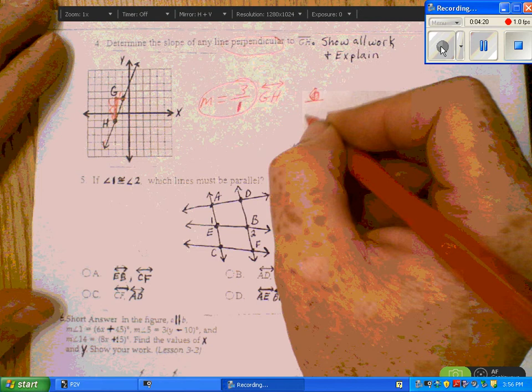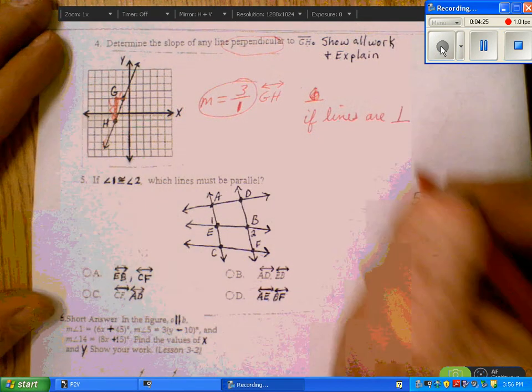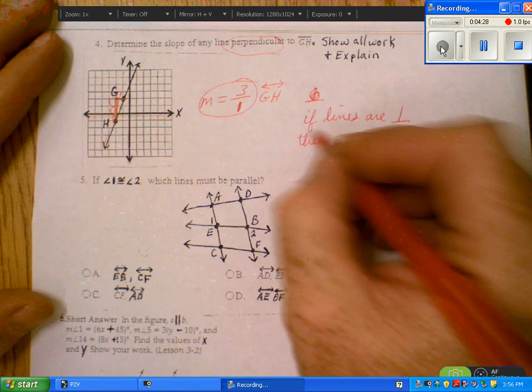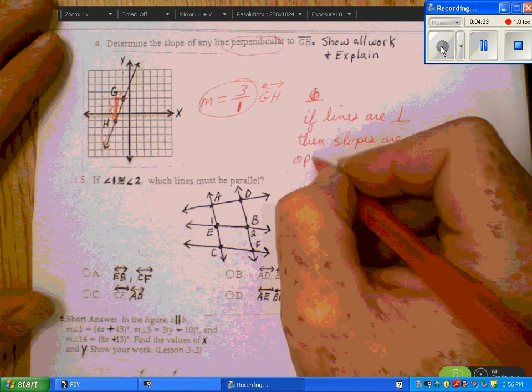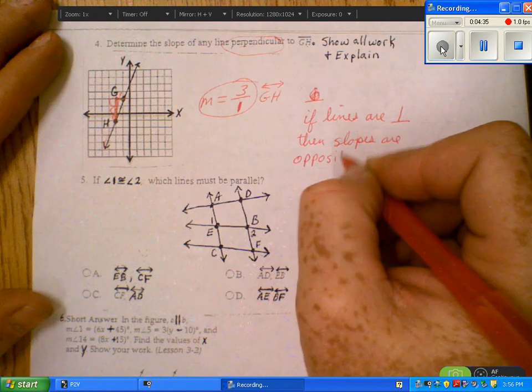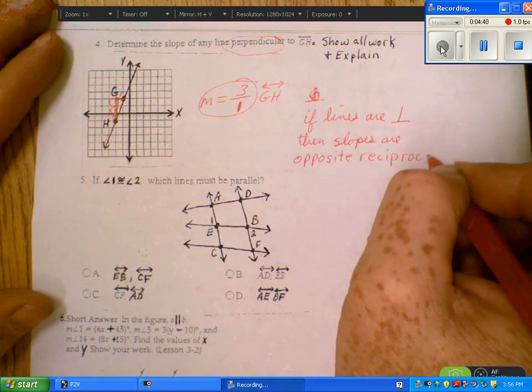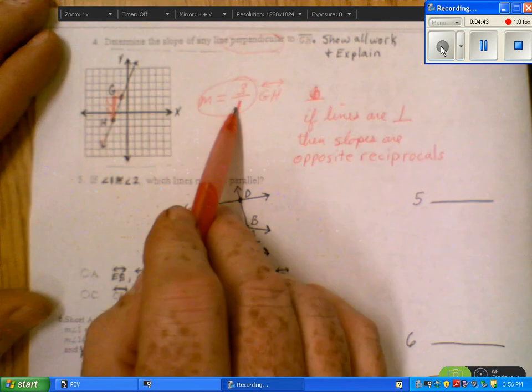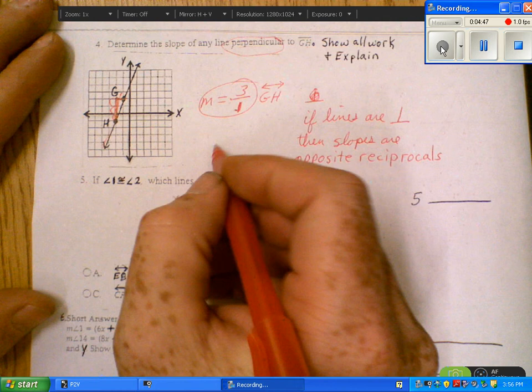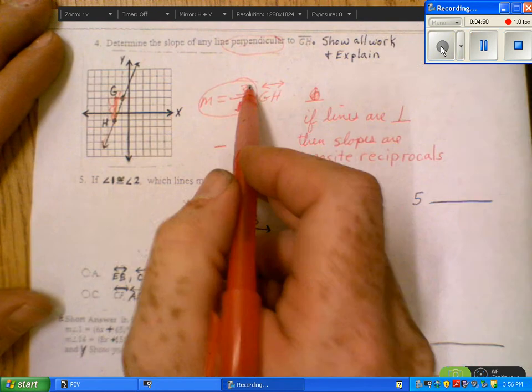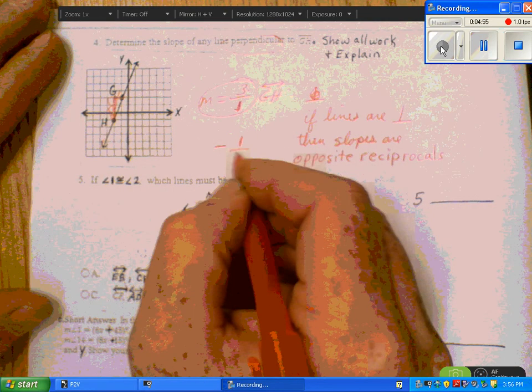If lines are perpendicular then slopes are opposite reciprocals. That means you take your slope. The opposite, it was positive so it's going to be negative. And you flip it over. We were up 3 over 1. So it's going to be negative one over three.